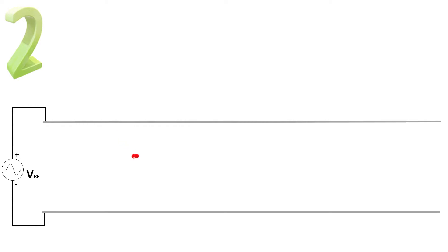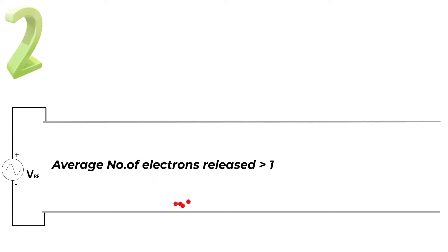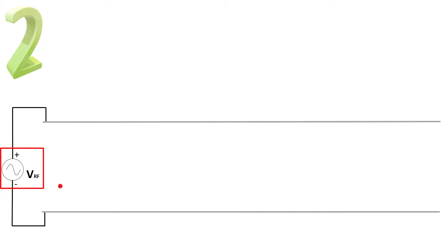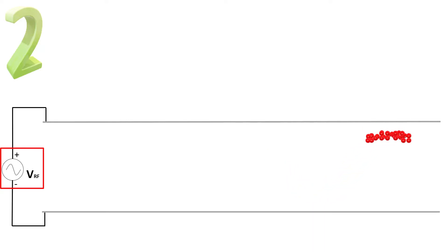The second condition: the average number of electrons released is greater than one, which is dependent on the secondary electron yield of the surface, which in turn is dependent on the field strength — the RF power — between the surfaces. Another way of stating this is that when the RF electric field is applied, the electrons bounce between the surfaces. When the electron energy is high enough that when it hits a surface, the conditions are such that secondary electrons are emitted.